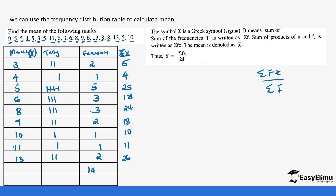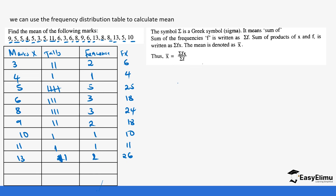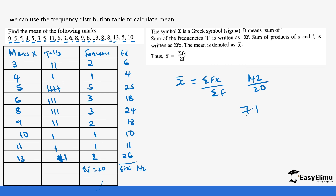When calculating the mean, we use the formula: sum of fx over sum of f. Adding all the frequencies gives us sum of f = 20. Adding all the fx values gives us sum of fx = 142. So the mean is 142 divided by 20, which gives us 7.1 — the same result as when we calculated directly from the raw data.